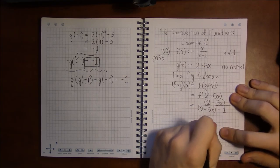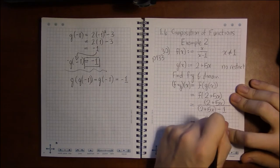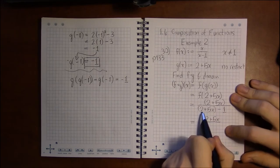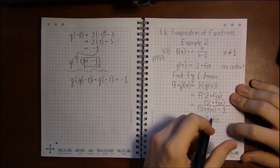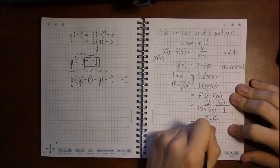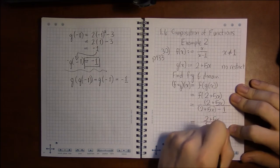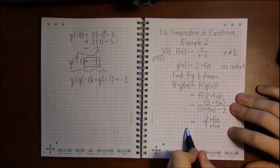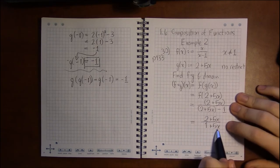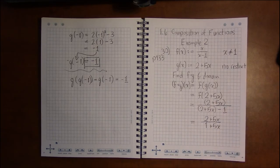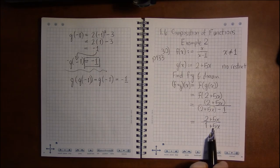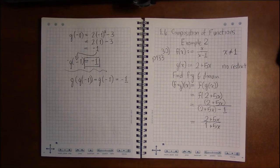So when we look at this, that's just 2 plus 5x on top. Here the only like terms are 2 and minus 1, and 2 minus 1 is just 1. And there's nothing left to do, so this is going to be our formula for the composition of f and g.